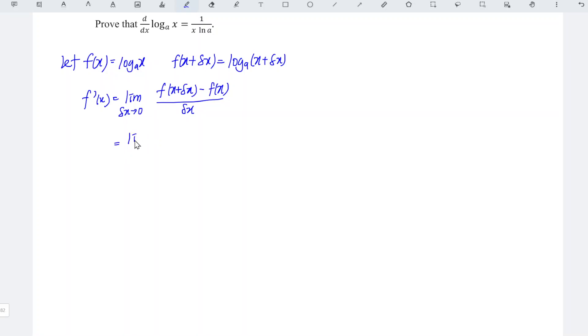This should be equal to, we just have to substitute what we have here. So log to the base a of x plus delta x minus log to the base a of x over delta x. Applying the law of logarithm, we should have 1 over delta x times log to the base a of x plus delta x over x.